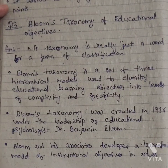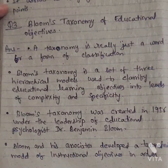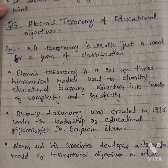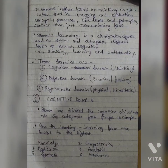procedures, principles, rather than just remembering facts. Bloom's Taxonomy is a classification system used to define and distinguish different levels of human cognition, i.e. thinking,